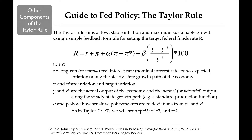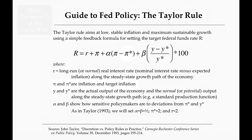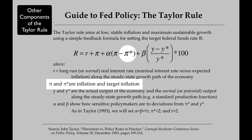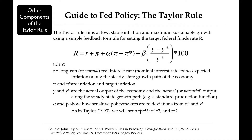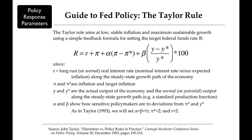Other components of the Taylor Rule include the long-term real interest rate, little r; pi star, which is the target inflation rate of the Fed; and parameters alpha and beta, which measure the sensitivity of Fed policy to inflation and output, respectively.